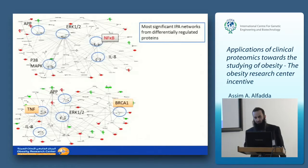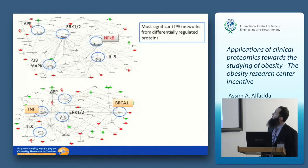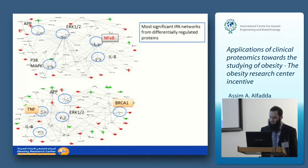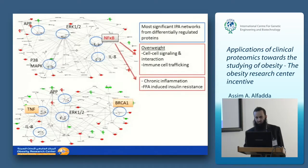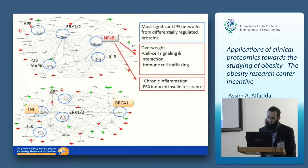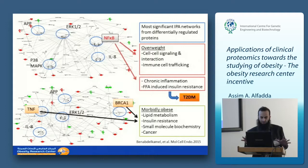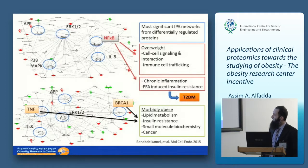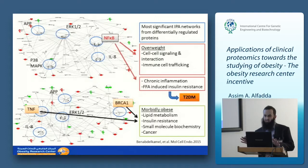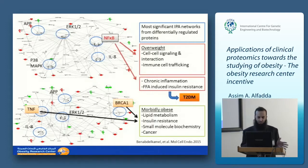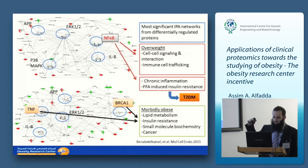Ingenuity pathway and network analysis revealed that in overweight, the dominant pathways include NF-κB, ERC-1 and 2, and MAP kinase P38, mainly linked to cell signaling and interaction, immune cell trafficking, chronic inflammation, and free fatty acids reducing insulin resistance — explaining why overweight individuals develop type 2 diabetes over time. In obese individuals, the signature is different, involving pathways in lipid metabolism, insulin resistance, small molecule biochemistry, and cancer-related processes. This data shows these are not part of the same continuum.